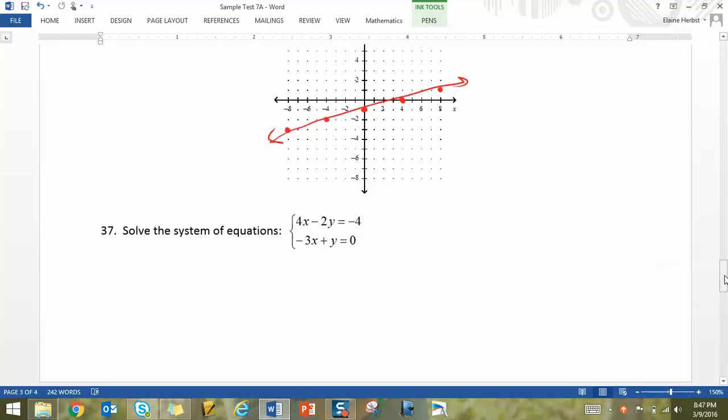37, when you solve the system, probably most of you would multiply the bottom equation by 2. And you end up with x is 2 and y is 6.